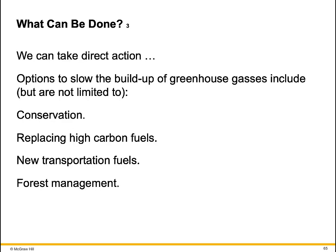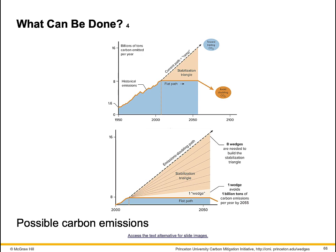We can take direct action. Options to slow the buildup of greenhouse gases include, but are not limited to, conservation, replacing high-carbon fuels, new transportation fuels, and forest management. Looking at possible carbon emissions through the mid-century: if emissions do not increase, they would follow a flat path. However, at current trends, it is more likely that we will follow the emissions-doubling path. The difference in carbon emissions for these two scenarios is represented by the stabilization triangle.